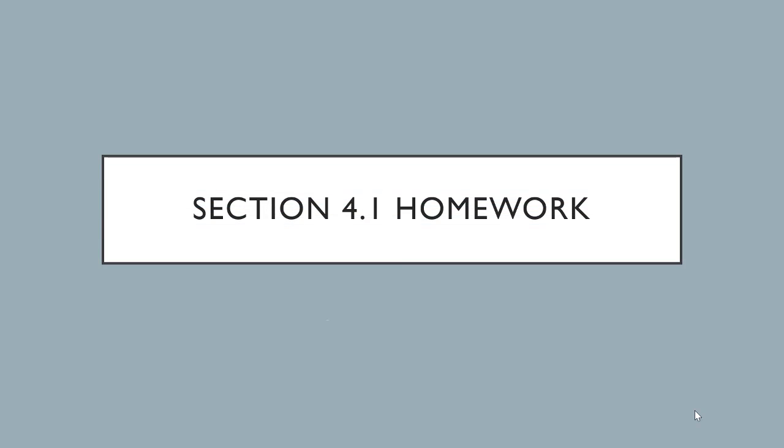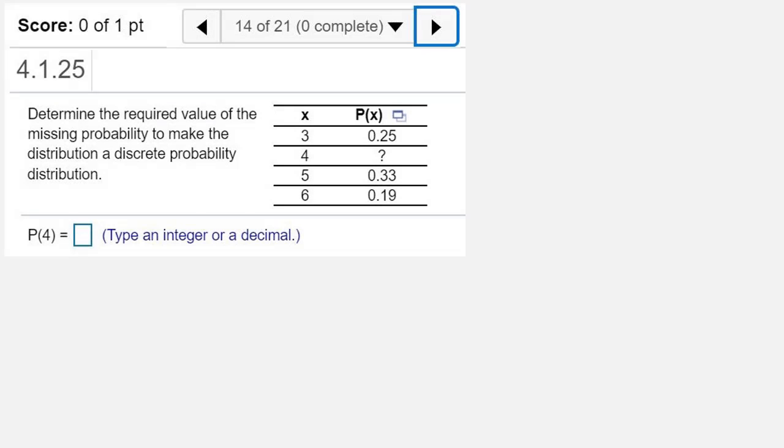We're looking at homework from section 4.1. This is question number 14. Determine the required value of the missing probability to make the distribution a discrete probability distribution. And we're looking for probability of 4. And we want to type an integer or a decimal.